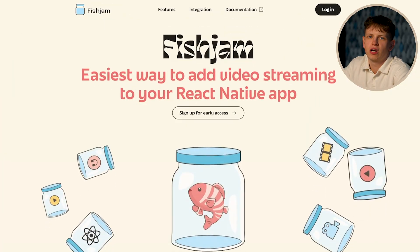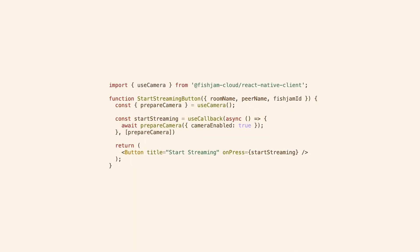How do I start? Just a few steps is all it takes to get running. First, create your account in the Fish Jam dashboard. Install our SDK and build native dependencies. Configure required permissions for Android and iOS. Import the use camera hook and use it to set up your camera.